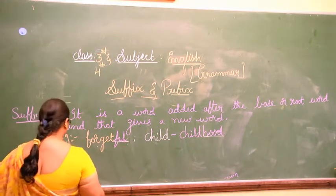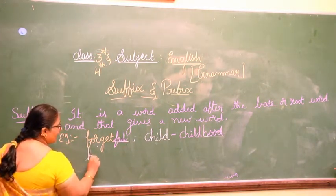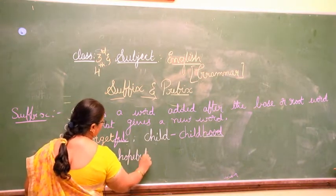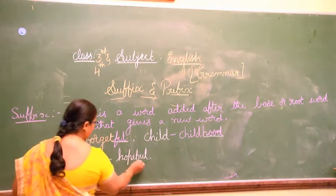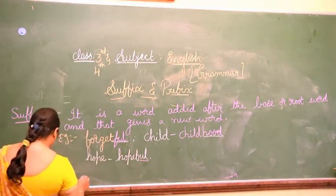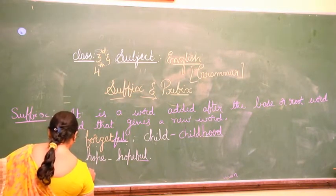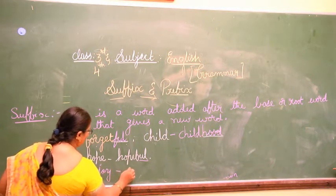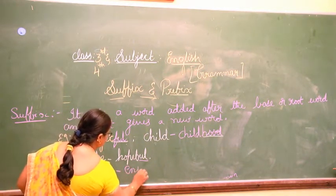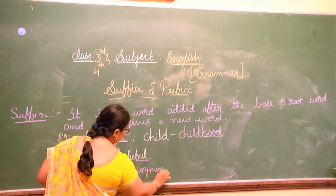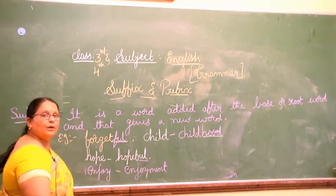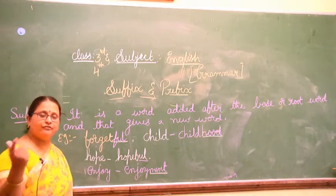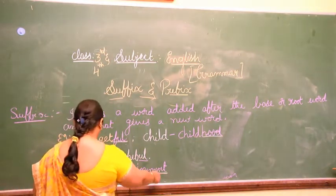We also have 'forgetful' and 'hopeful'. H-O-P-E + full = hopeful. Here we have the suffix 'full'. We also have 'enjoyment'. E-N-J-O-Y + M-E-N-T. For this 'enjoy' we added 'ment', and now it becomes a different word — enjoyment.